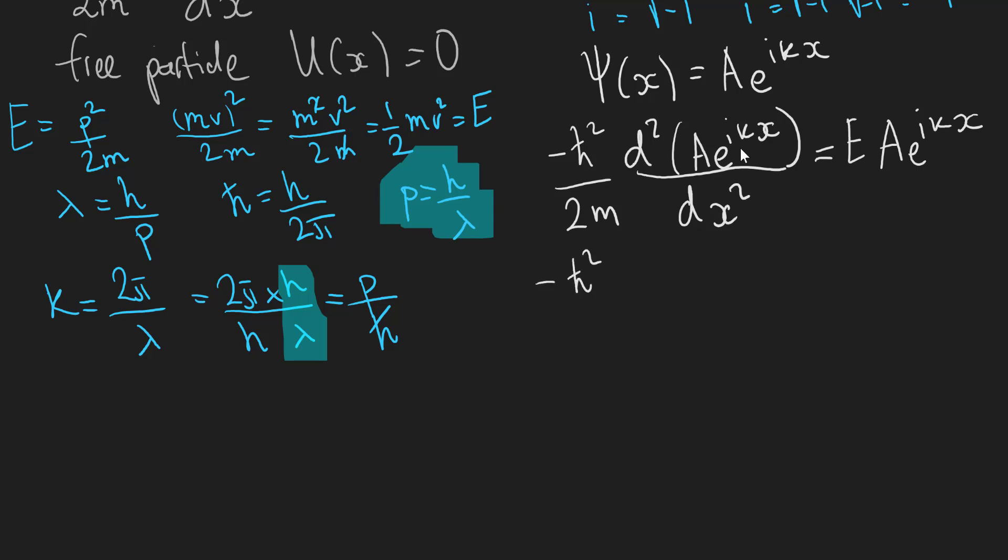So let's just write this down. So minus h bar squared over 2m multiplied by, let's put some brackets here, ik squared multiplied by our original function, which is just A e^(ikx), will be equal to the energy multiplied by the original wave function that we have guessed.